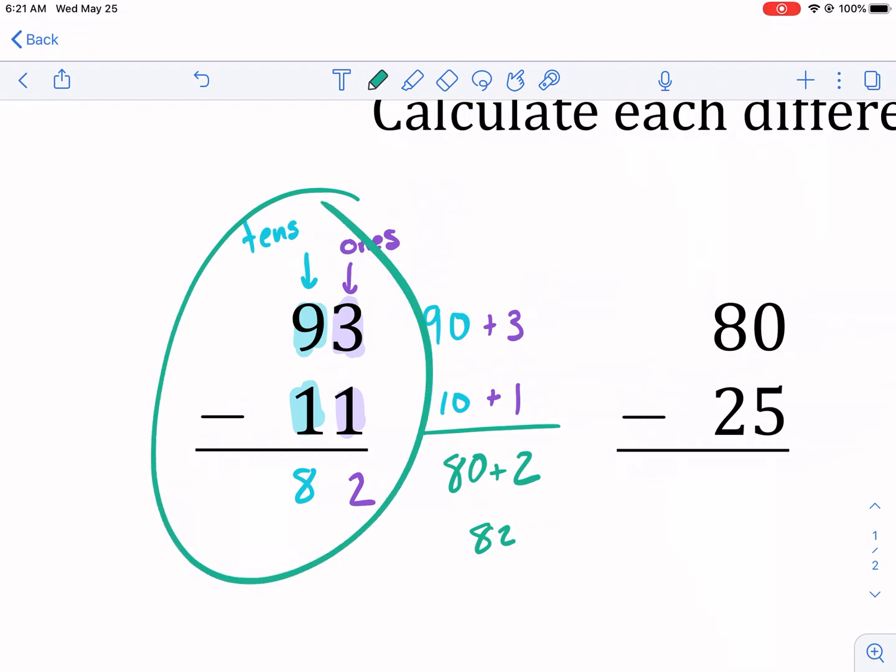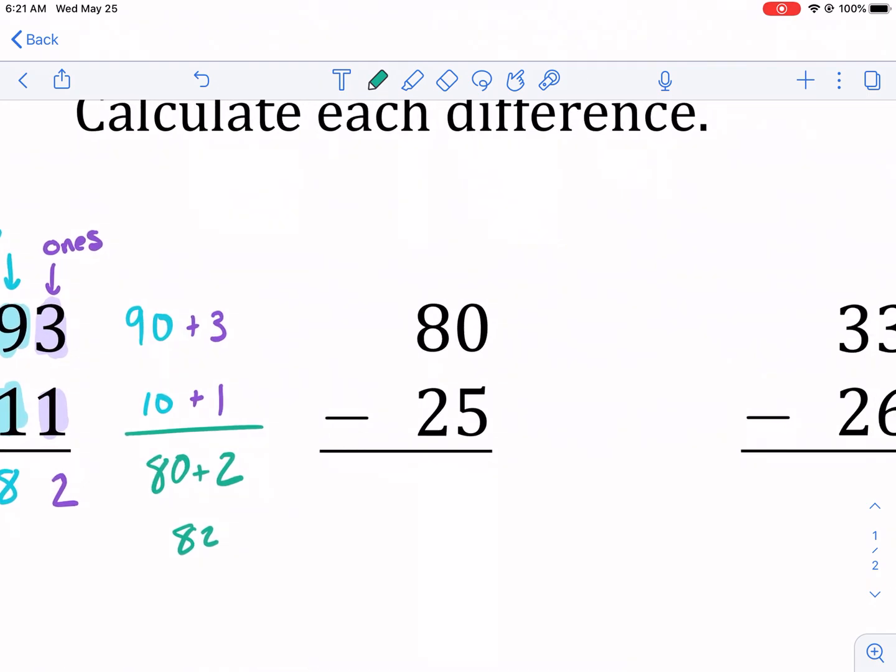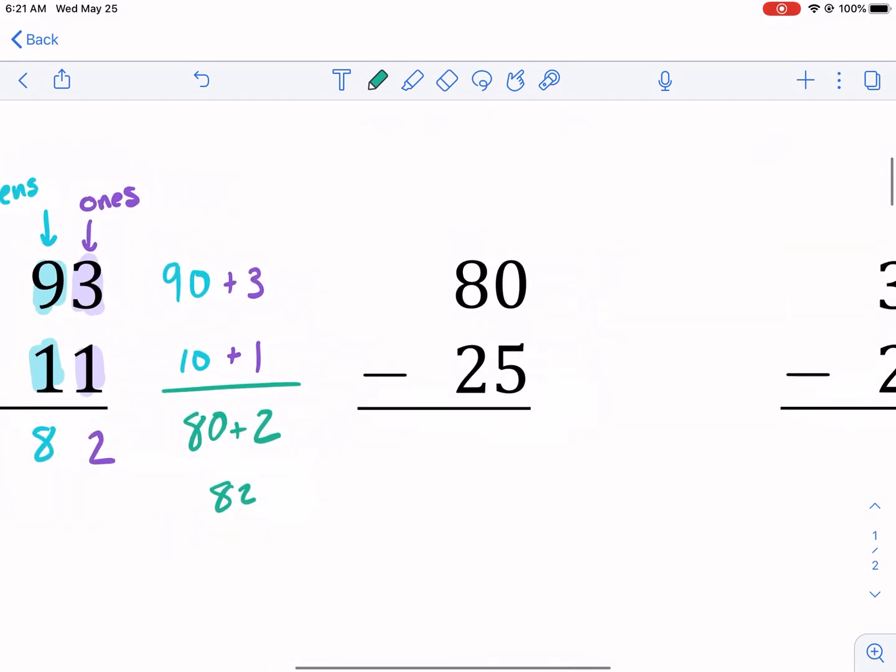And now this one's an easy example, because there's no borrowing. Standard algorithm requires borrowing. So we'll go ahead and show an example, number three, of what it looks like when we borrow.